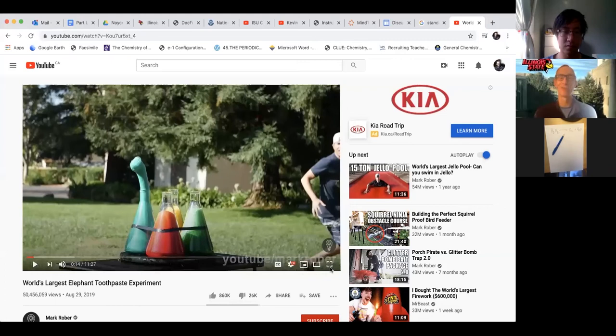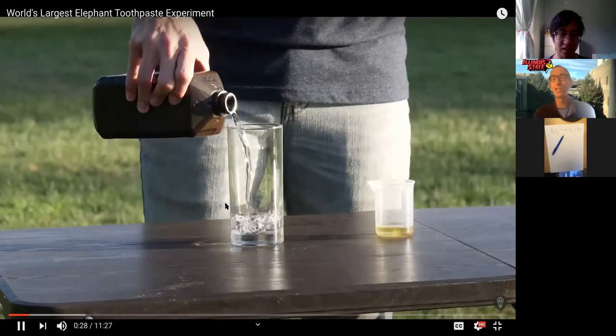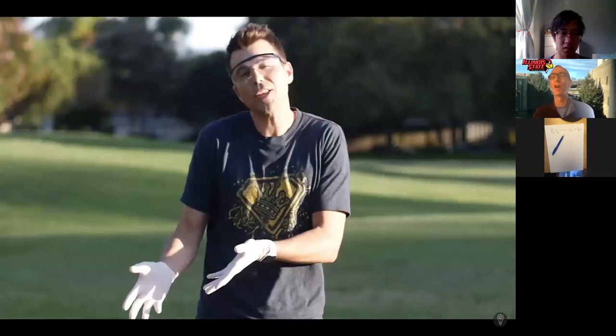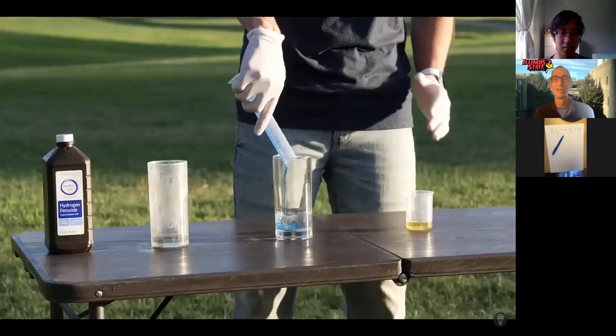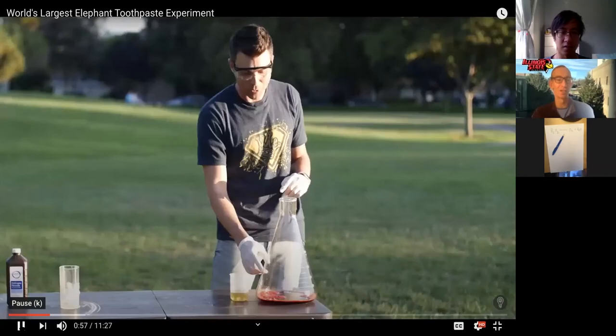The instructor shares an elephant's toothpaste video — the world's largest demonstration — where hydrogen peroxide is poured with a catalyst and soap to create a dramatic foamy reaction. It's the exact same reaction: hydrogen peroxide decomposing into oxygen and water.